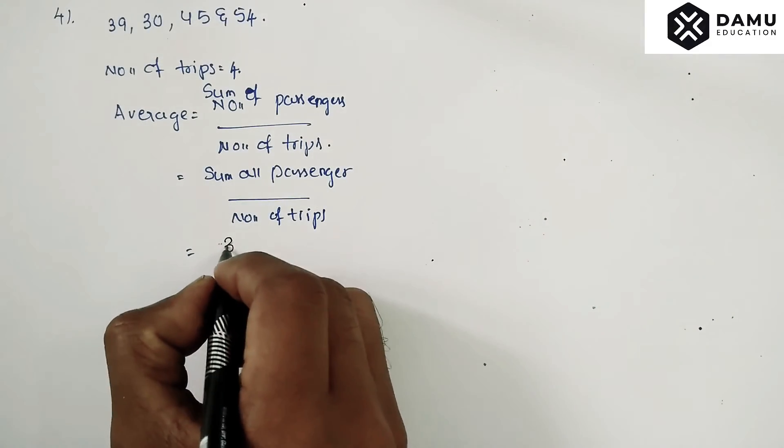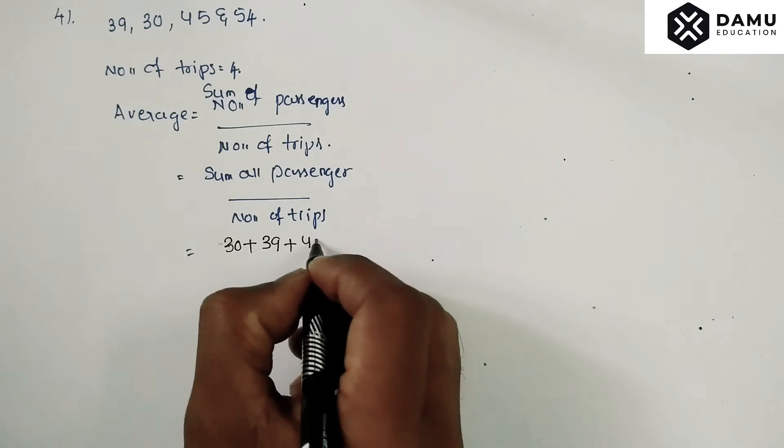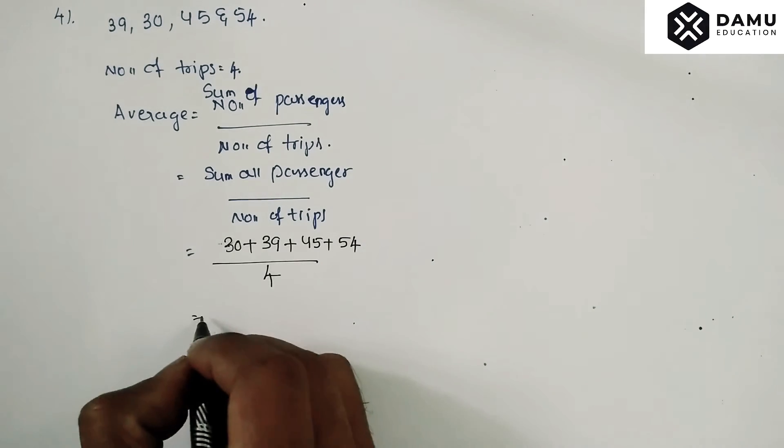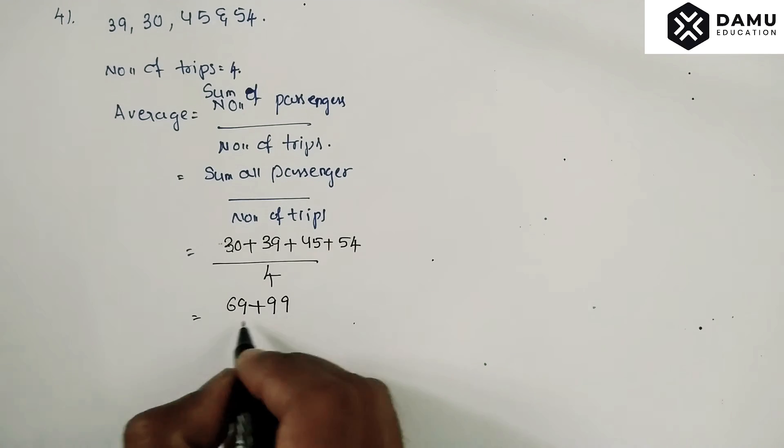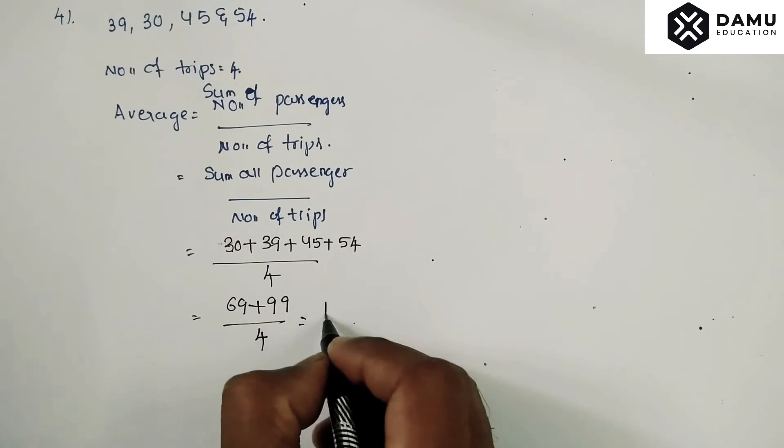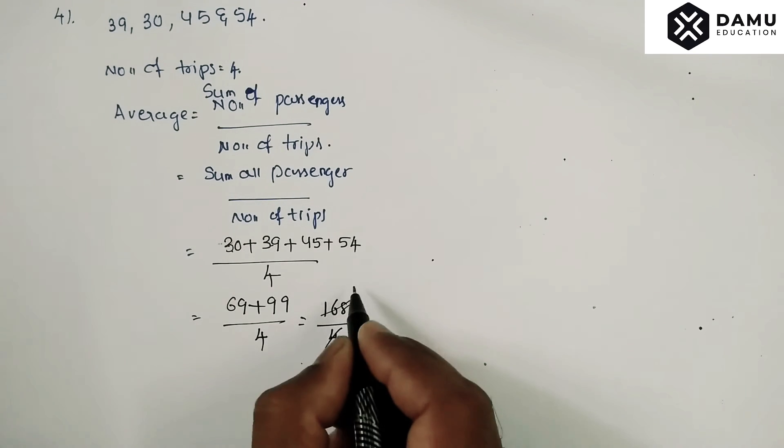That's divided by 4. So if we add 30, 39 equals 69, plus 45, 54 will be 99, divided by 4. So what you will get is 168 by 4.